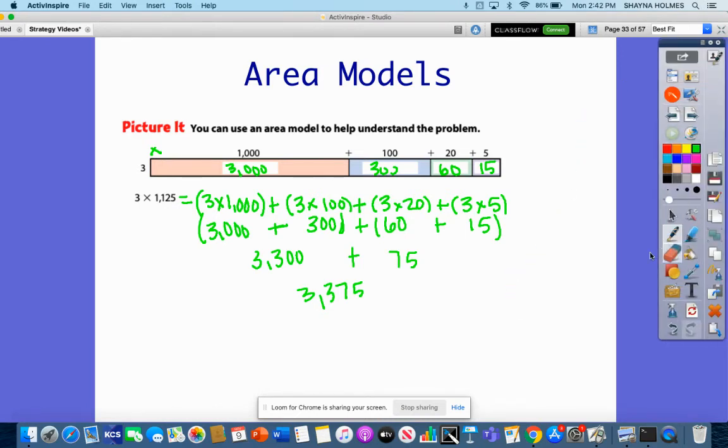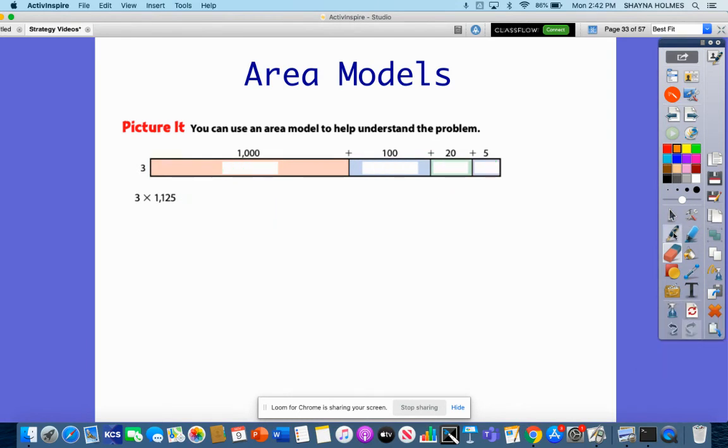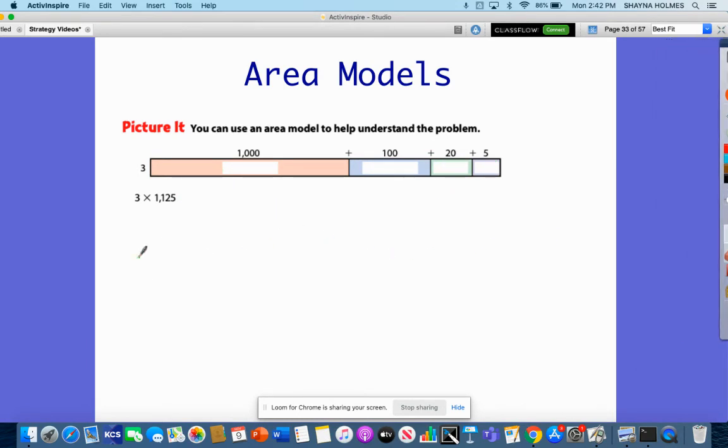Let's do another example together. Say that I have the number 2 times 637. Now this one is only a three-digit number. I'm going to put my 2 out here just like I did, but this one only has three place values. I'll break this into its hundreds, tens, and ones.